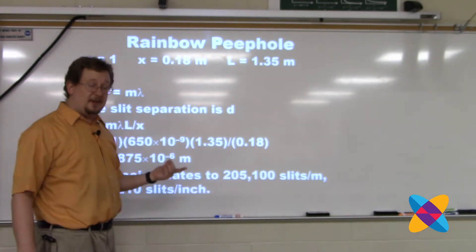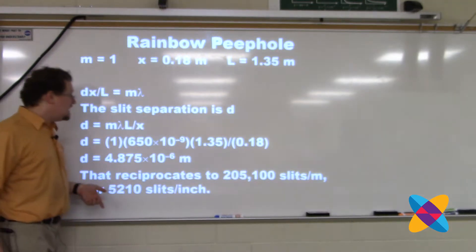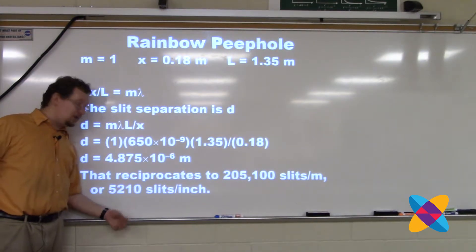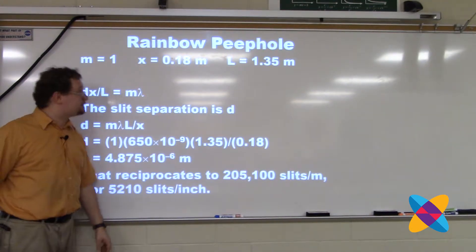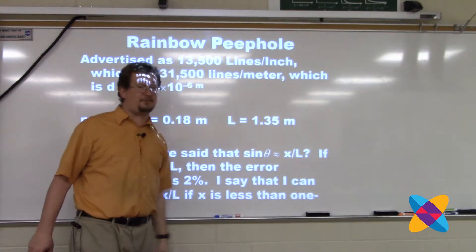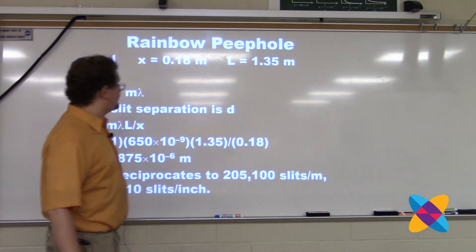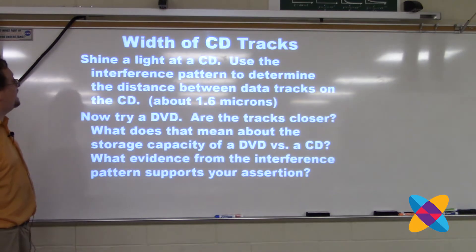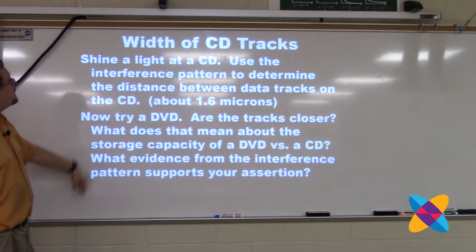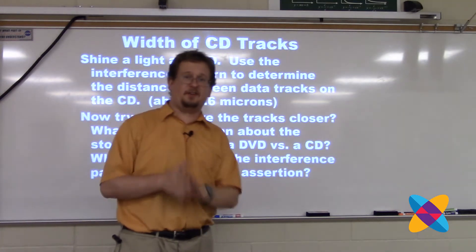If you reciprocate that you get slits per meter; if you divide by the number of inches in a meter, you get slits per inch — that winds up being 5,210 slits per inch. Not even close to the 13,500 that they advertised. They are lying.